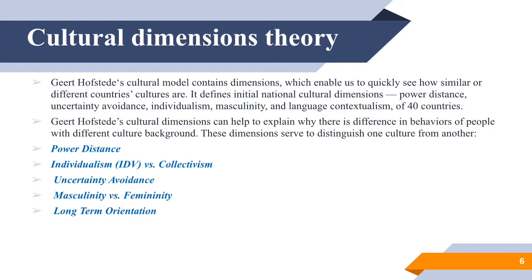Two more dimensions are masculinity/femininity and long-term orientation. The masculinity and femininity dimension pertains to the degree societies reinforce or do not reinforce the traditional masculine work role model of male achievement, control, and power. A higher masculinity score indicates a higher degree of gender differentiation — in such countries, males tend to dominate a significant portion of the society and power structure. Long-term orientation stands for fostering virtues oriented towards future rewards, in particular perseverance and thrift. Short-term orientation stands for fostering virtues related to the past and present, in particular respect for tradition, preservation of face, and fulfilling social obligations.